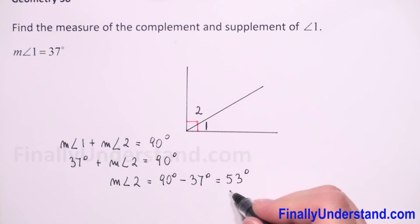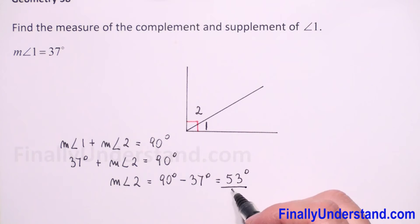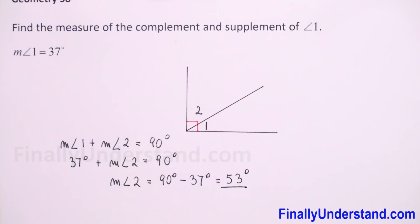So we found that the measure of angle two, which is the complement of angle one, is 53 degrees. Now we need to find the supplement of angle one. Two angles are supplementary angles if the sum of their measures is 180 degrees.